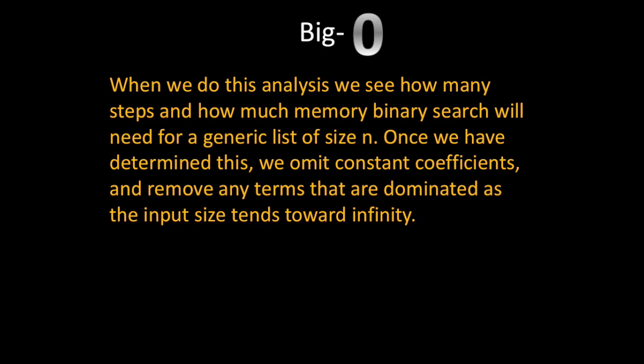So again when we do this analysis we see how many steps and how much memory binary search will need for a generic list of size n. So we do both of these analyses separately one for steps and the other for memory. So once we've determined this we omit constant coefficients.